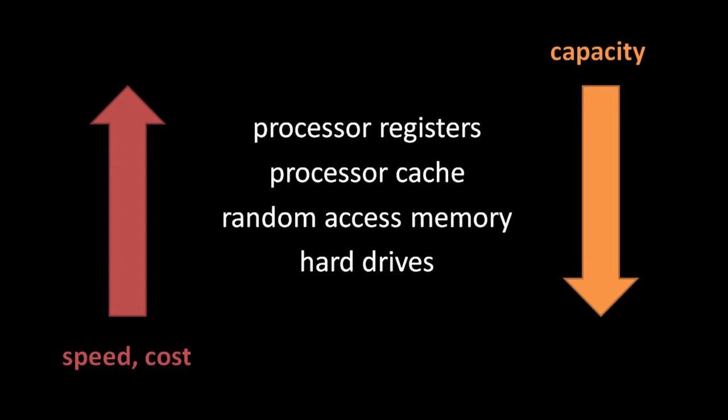The cache uses a form of memory called SRAM, short for static RAM, as opposed to the DRAM — dynamic RAM — used for system memory. Unlike DRAM, SRAM doesn't require a refresh cycle to keep its content, allowing SRAM to be read and written significantly faster. Moreover, the processor cache is often placed on the CPU die itself, allowing for faster access by the CPU. On the other hand, SRAM is significantly more expensive per byte, and so the typical x86 CPUs of 2013 have around 8 to 16 megabytes of cache, much smaller than the 4 or 8 gigabytes of RAM typically found in the same systems.